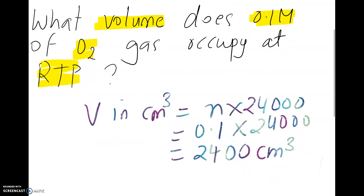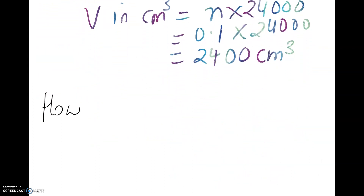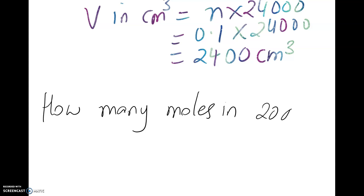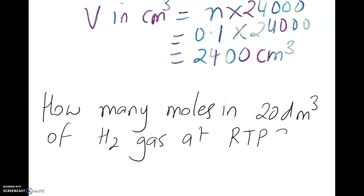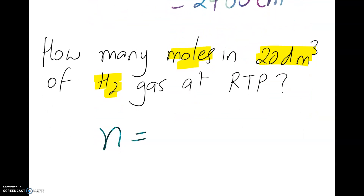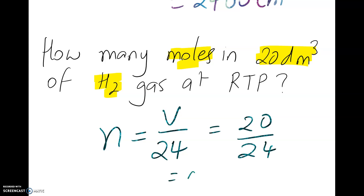Let's look at a slightly different example: How many moles are in 20 dm³ volume of hydrogen gas at room temperature and pressure? This time we need to work out the number of moles; we have 20 dm³ as volume. Number of moles equals volume divided by 24 because it's in dm³: 20 over 24 gives 0.833 moles.